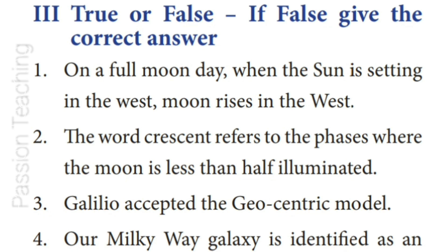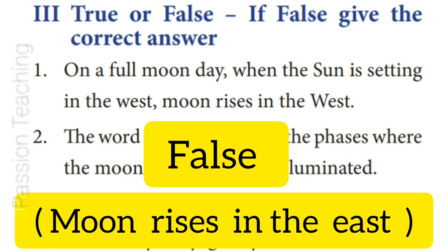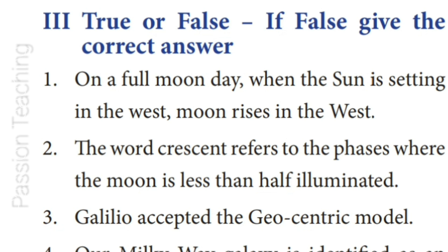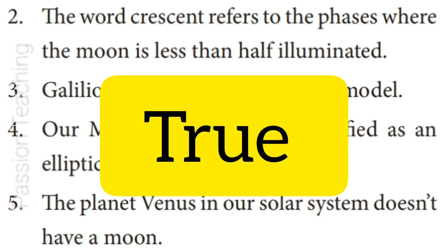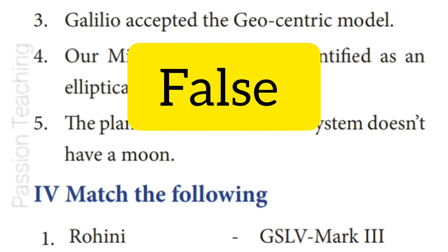Third Roman Letter: True or False. Question 1: On the full moon day, when the Sun is setting in the west, the Moon rises in the west — Answer: False. Actually, the Moon rises in the east. Question 2: The word crescent refers to the phases where the Moon is less than half illuminated — Answer: True.